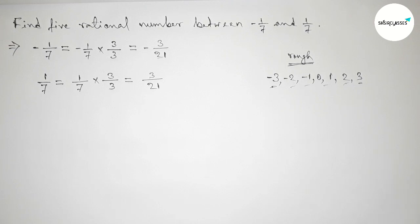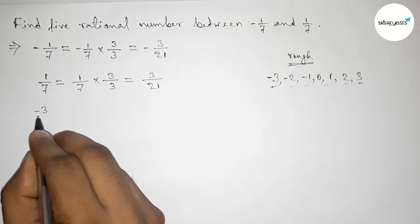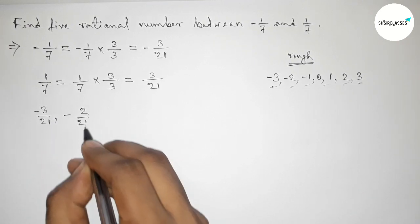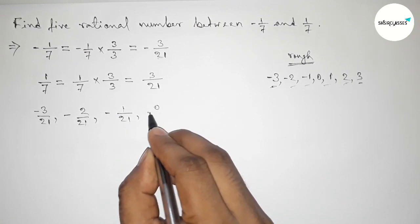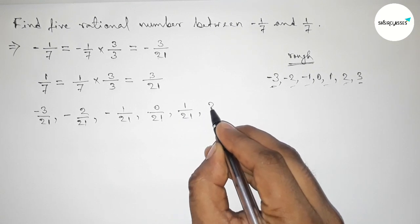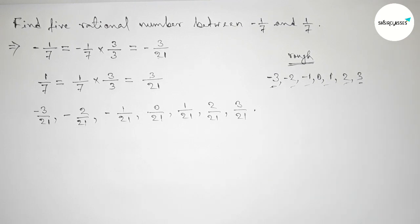By these 5 integers we can form 5 rational numbers. So here now first write down all the rational numbers: -3/21, then -2/21, then -1/21, then 0/21, then 1/21, then 2/21, then 3/21.